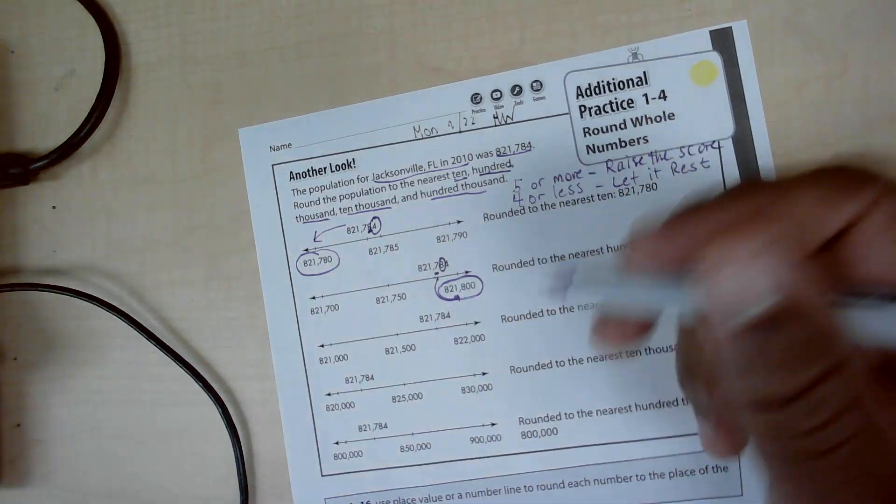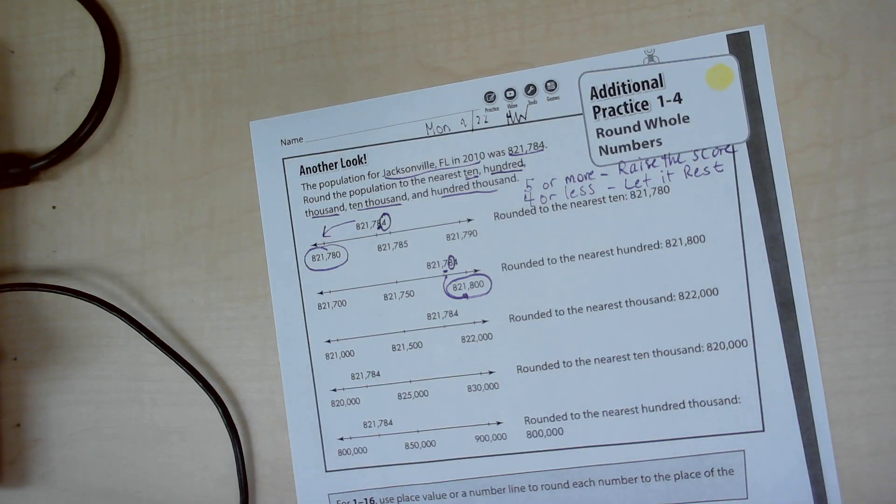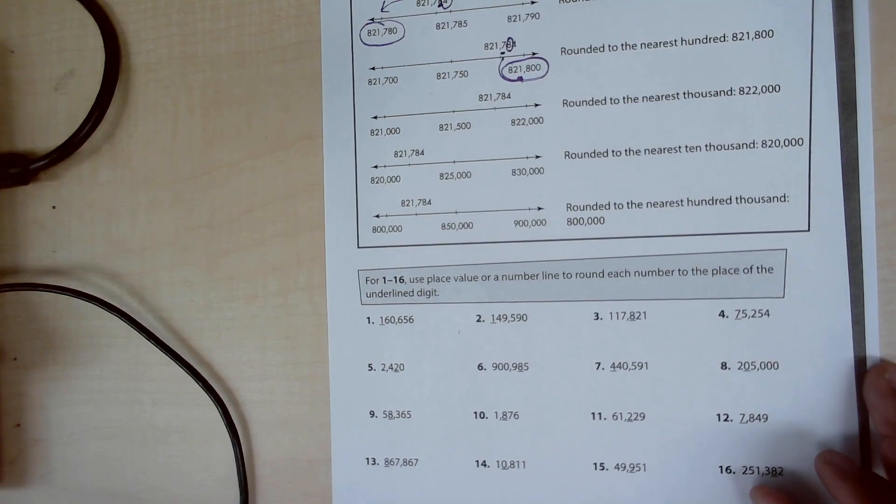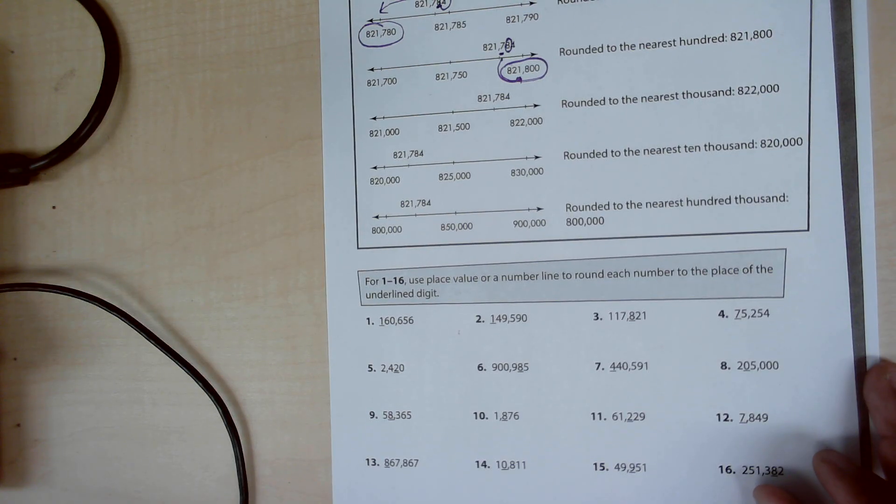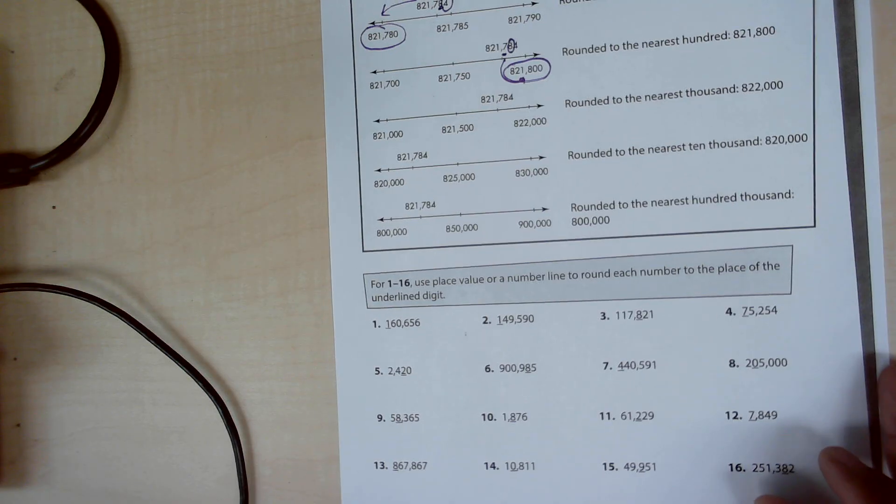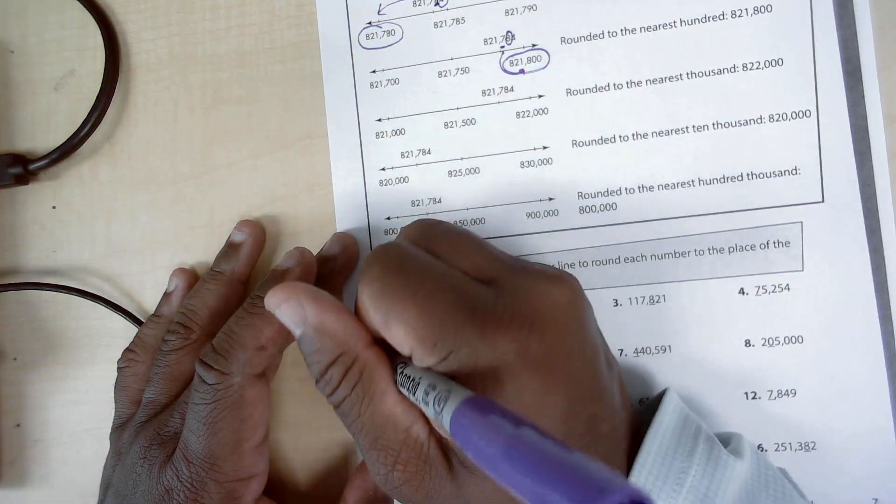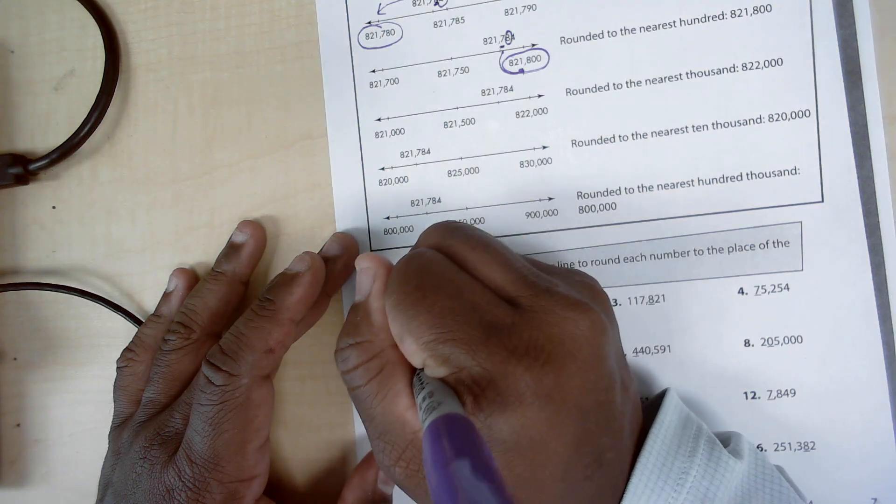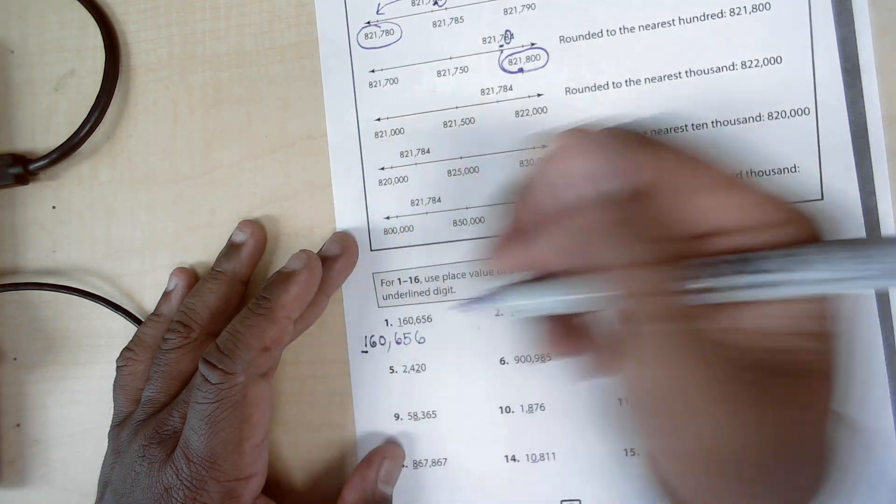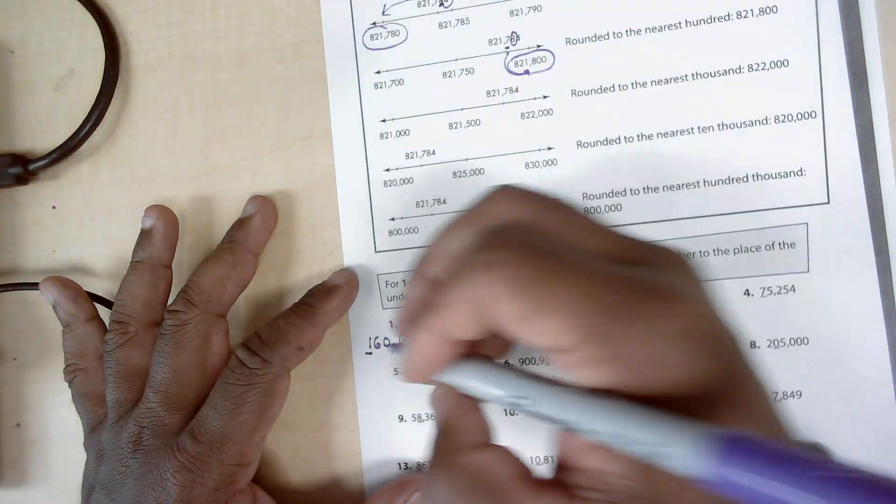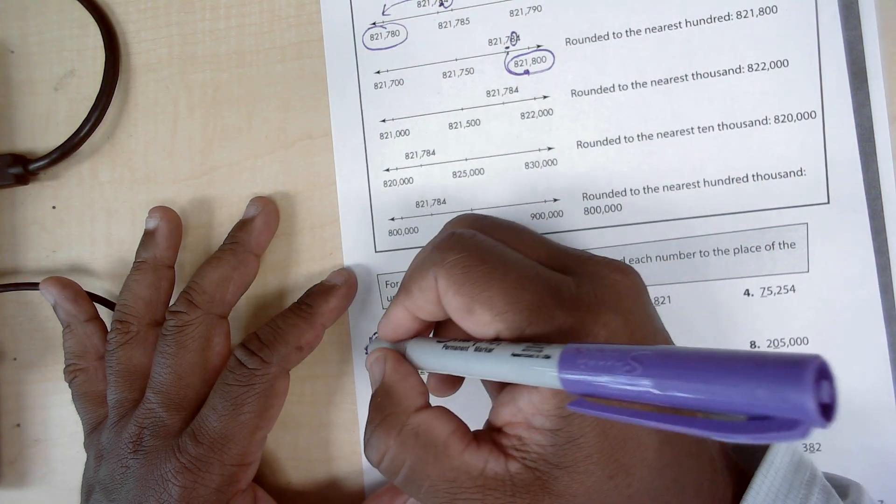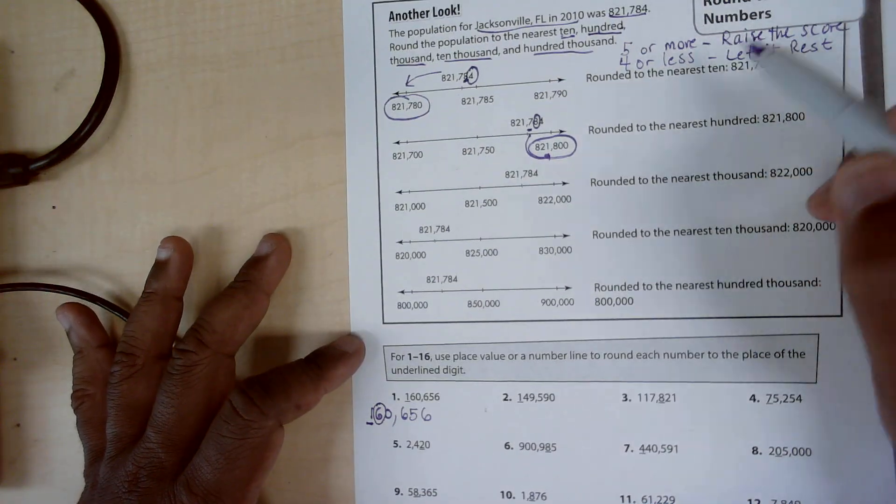And that continues on regardless of the place you're in. So let's look at the first three: use place value or a number line to round each number to the place of the underlined digit. So I'm going to rewrite this a little bigger, and the one is underlined, so that's the hundred thousands place. And then I look at the digit to the immediate right and I notice it's a six. So if it's five or more, raise the score.